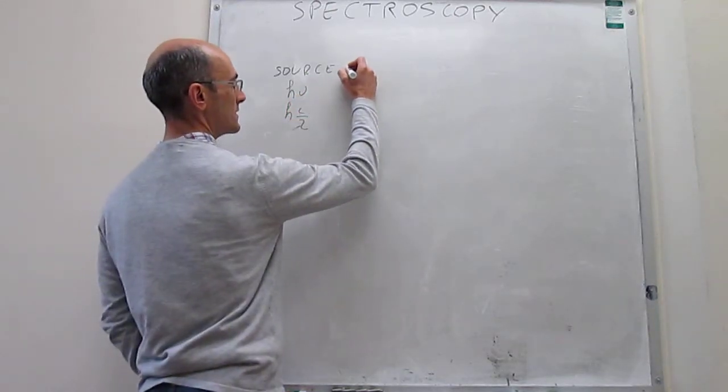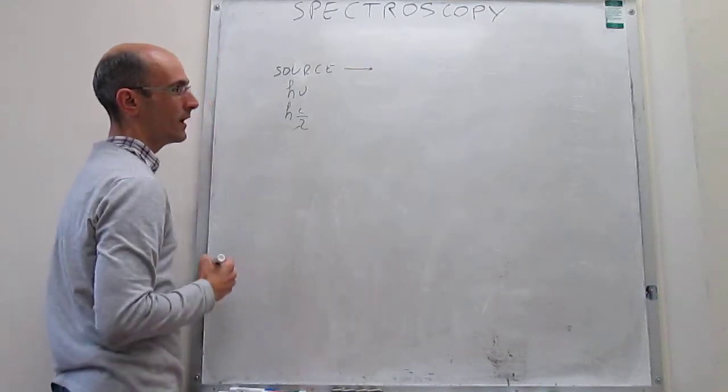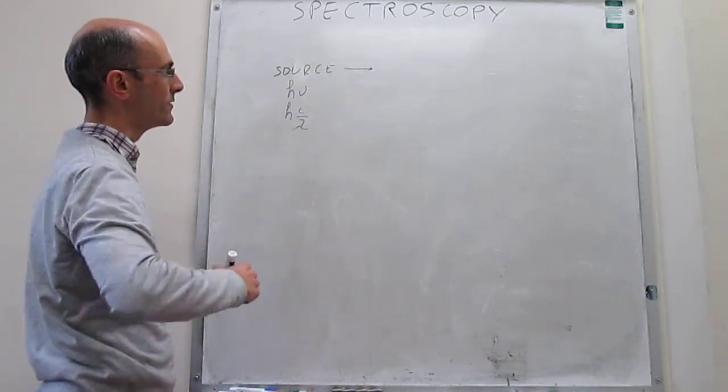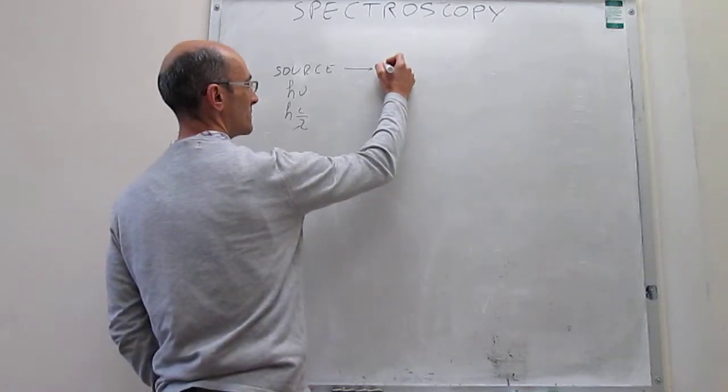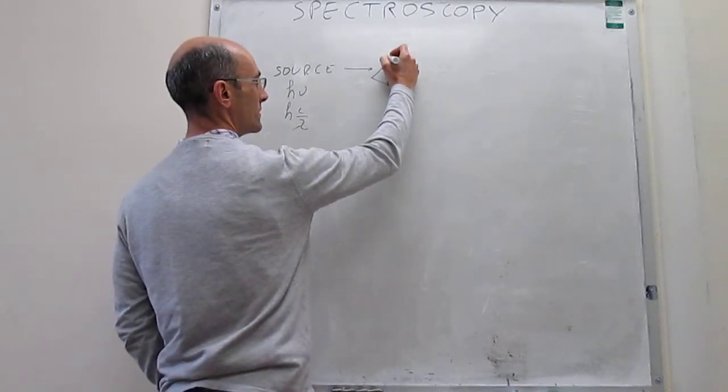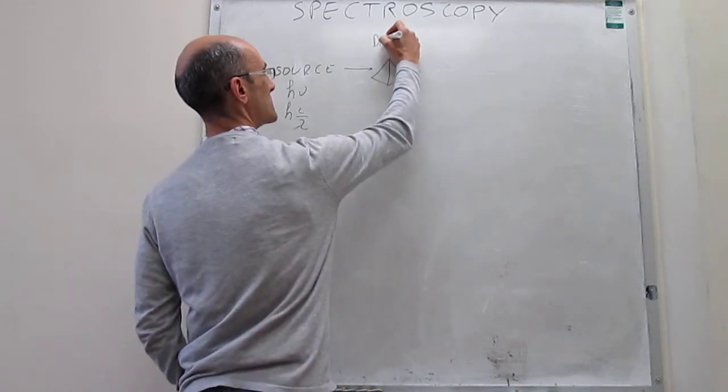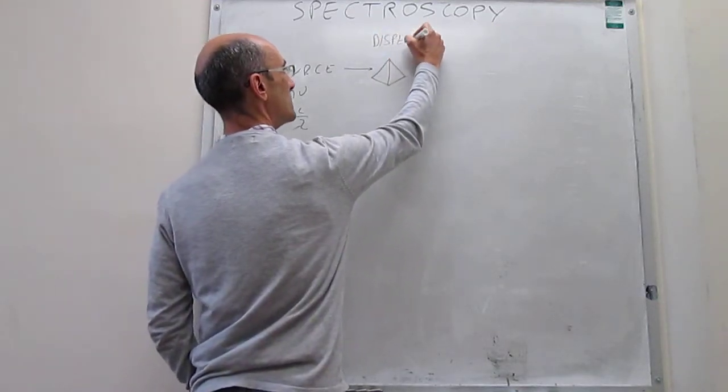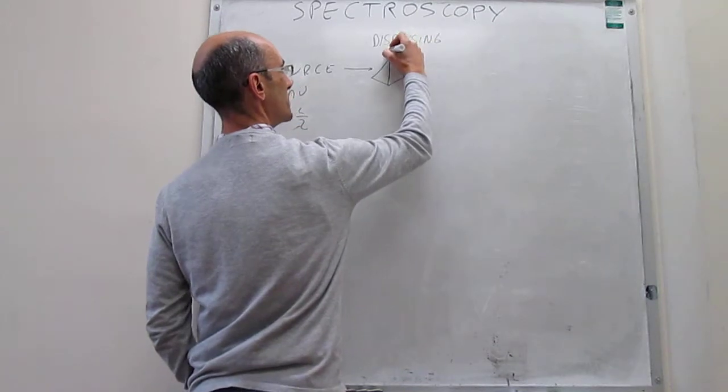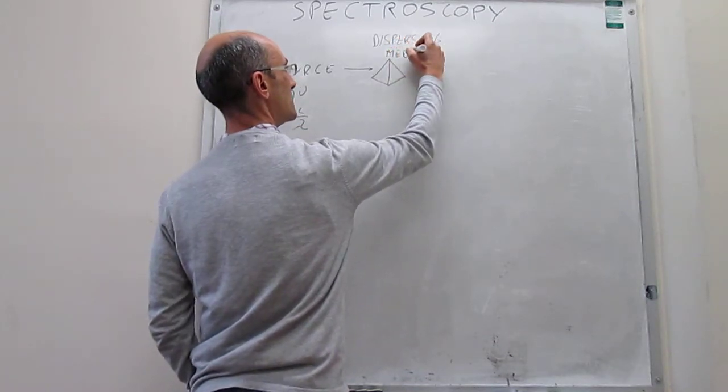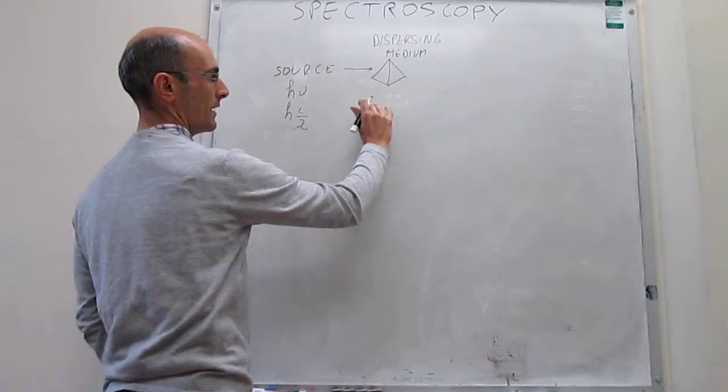This is sent into, in most common spectrometers, a dispersion medium, which I'm going to draw here as a prism. And again, the name is dispersion medium. And we'll explain what this does.